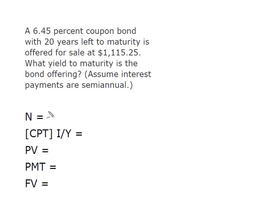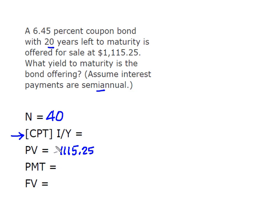So we need our N, the number of payments left — 20 years. We've got semi-annual payments, so that's going to give us an N of 40. We're going to compute IY. Our present value is the current price of the bond, but we have to enter that as a negative to avoid the Error 5 in our calculator.